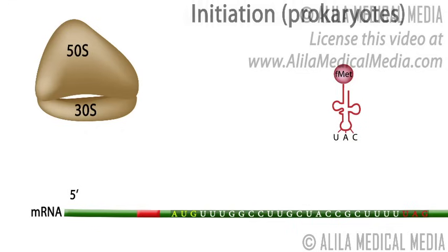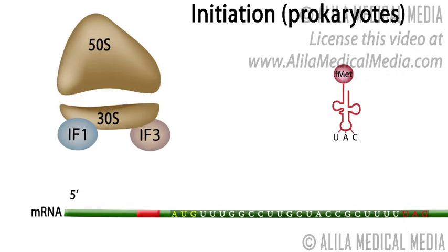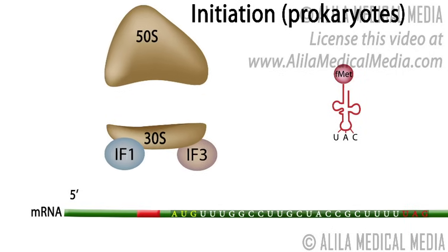Initiation of translation in prokaryotes. The small ribosomal subunit is separated from the large subunit with the help of two initiation factors, IF1 and IF3.